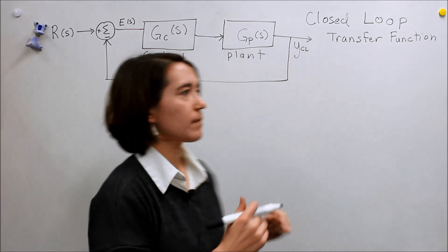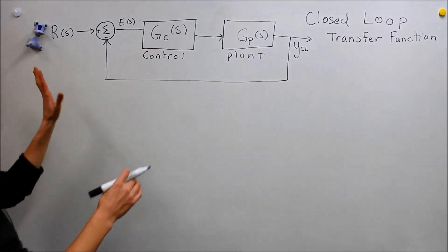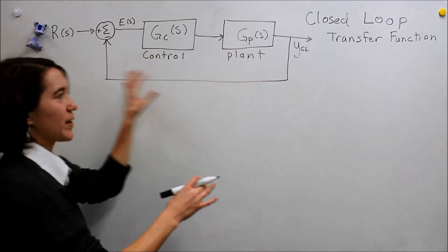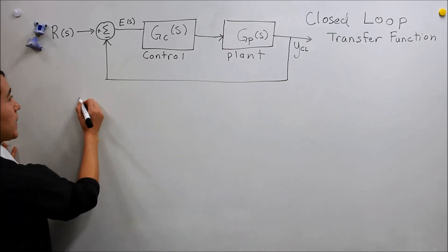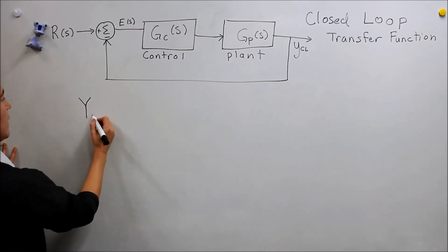Let's actually derive the transfer function for this closed-loop system. We will use the transfer function for the plant and we assume that we know or can model the transfer function for the controller. Let's start over here. Everything is linked together, so we just have to start somewhere. We are going to start with y_cl.